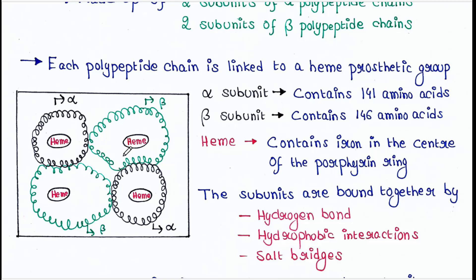What is that heme? Heme basically contains iron in the center of the porphyrin ring.